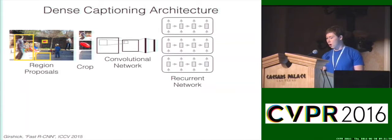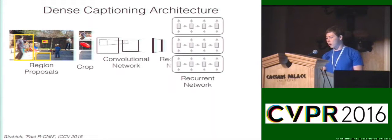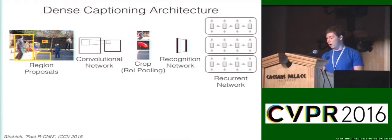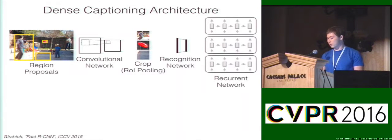Similar to FastRCNN, we can take our convolutional network and split it into a stack of convolutional layers and a fully connected recognition network. We can then swap the order of convolution and cropping. The convolutional network can now process the entire image at a high resolution, producing a convolutional feature map for the entire image. We can then crop out the section of the feature map corresponding to each region proposal. This modification greatly improves the efficiency of the system by sharing computation between different region proposals.